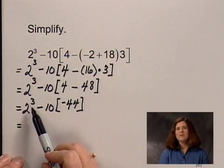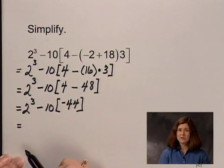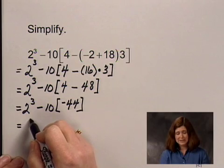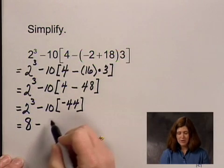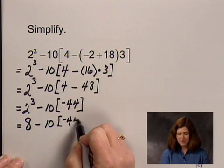2 to the third power means 2 written as a factor 3 times, 2 times 2 times 2, which is 8. So that's 8, and we copy the rest of the 10 times negative 44.